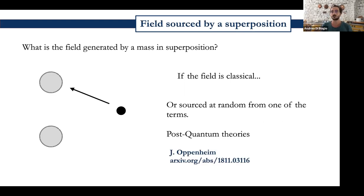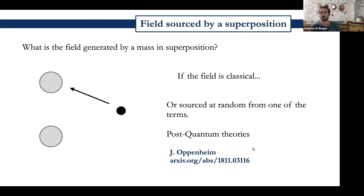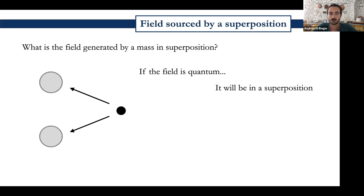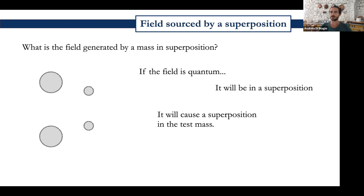There's another alternative where the field might be sourced at random by some element of the superposition — the particle would randomly go towards one of the two places. This won't spoil the superposition because the randomness doesn't allow you to determine where the other particle is. These are called post-quantum theories, and one I'm aware of is by Jonathan Oppenheim. But if the field is quantum, then we expect the field itself to be in a superposition, and the test mass will interact with the superposition and itself be in a superposition.